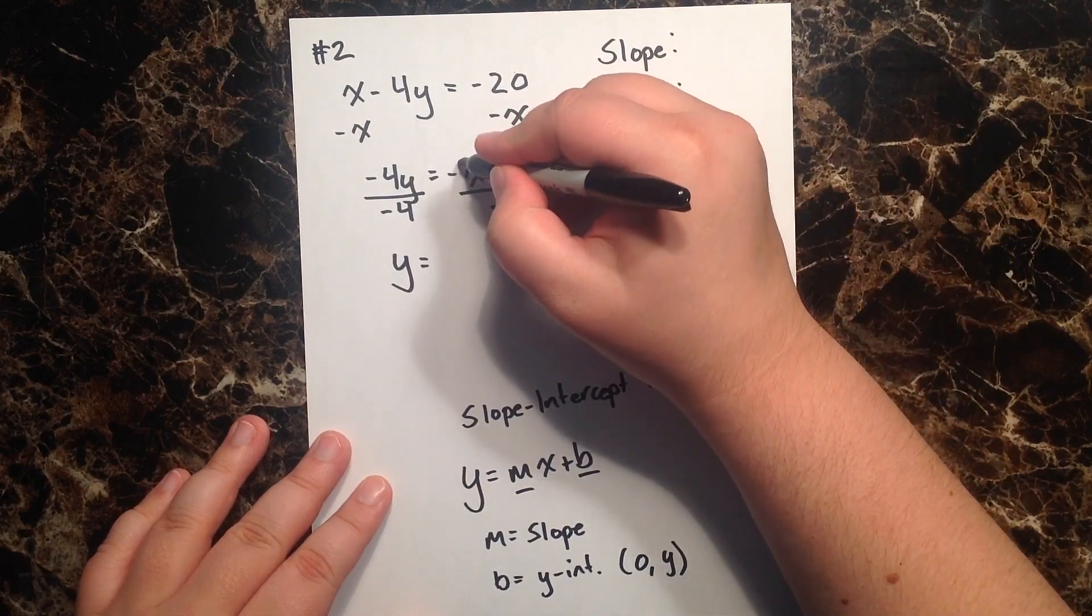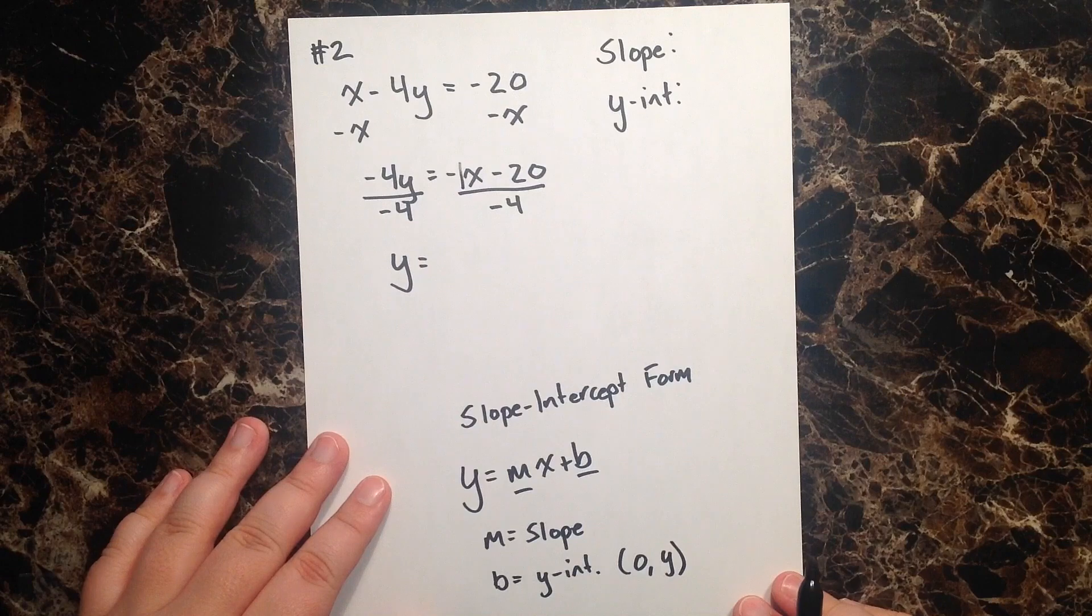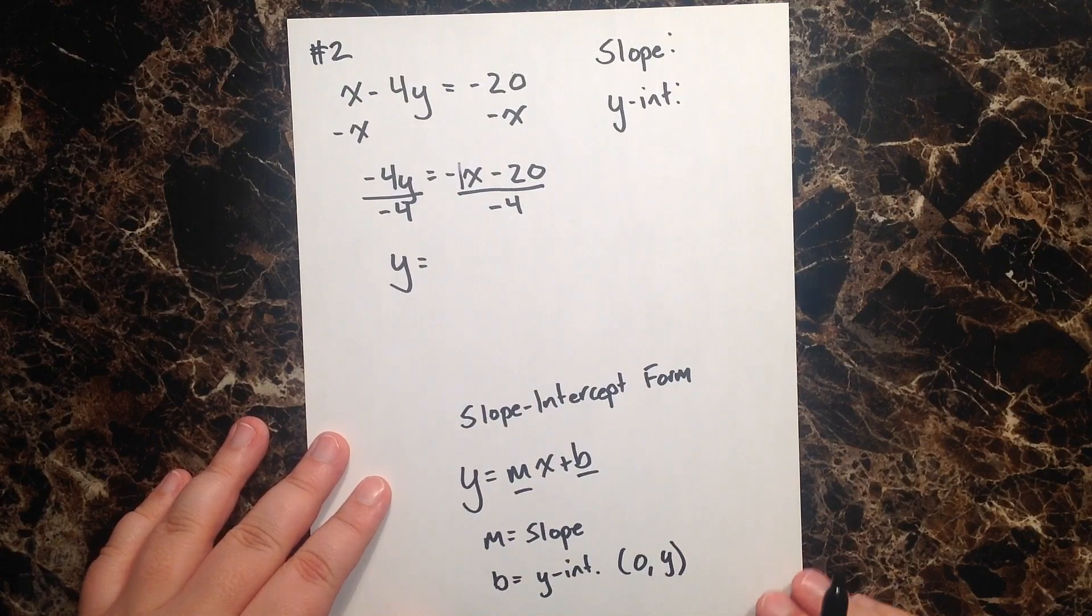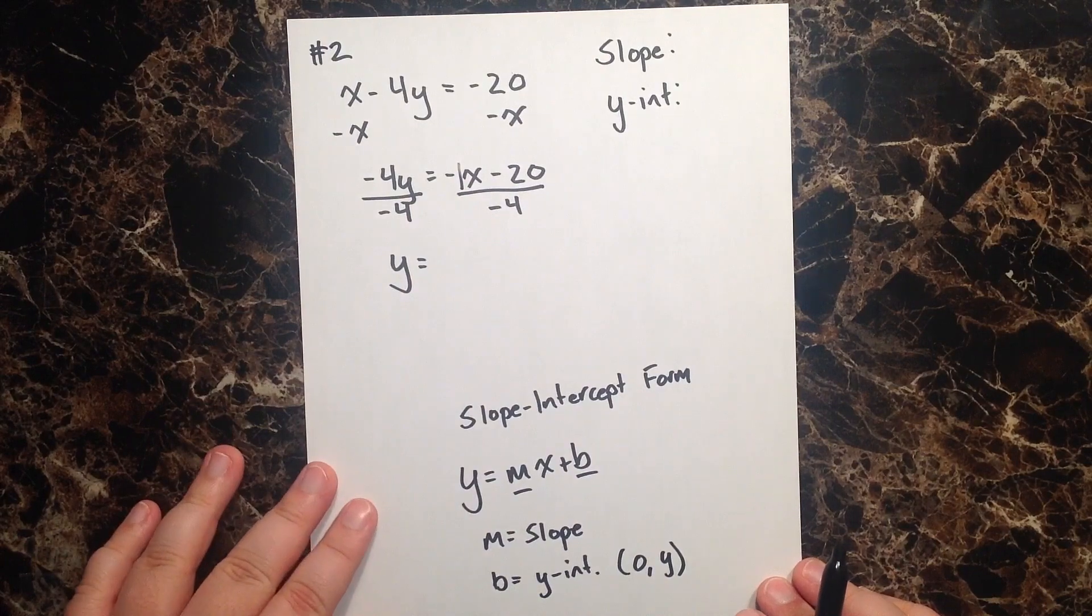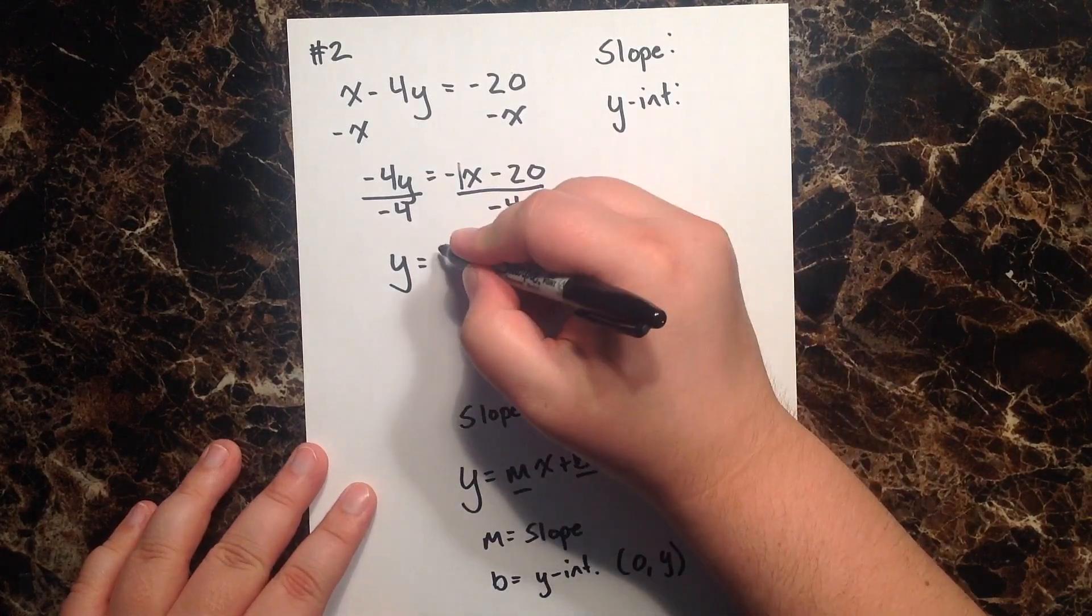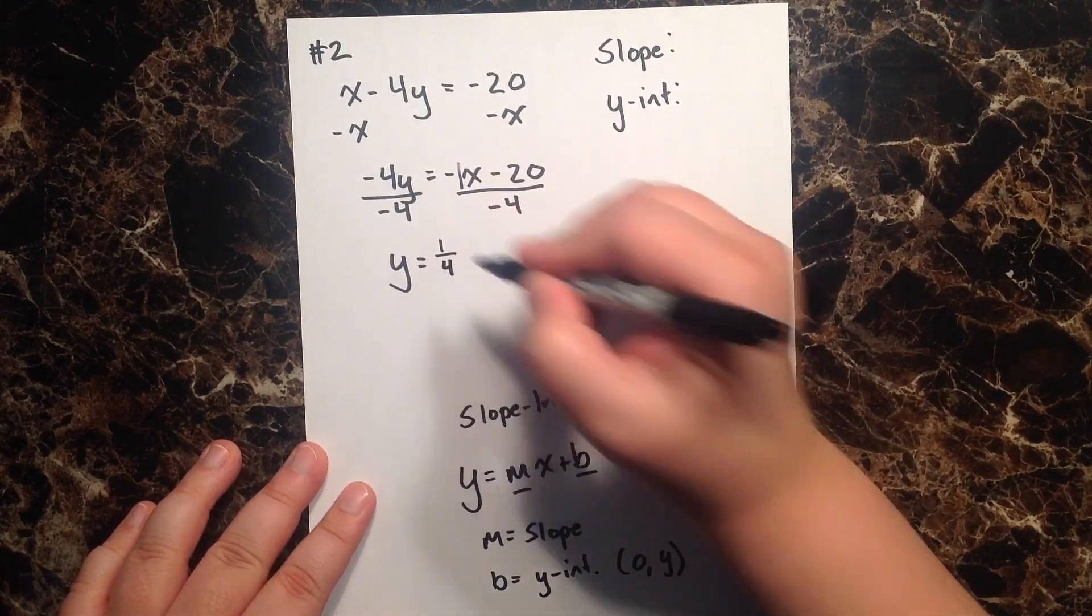we can pretend there's a 1 there in that position, and so really this is a negative 1 over a negative 4, which just comes out to be a positive 1 over 4.